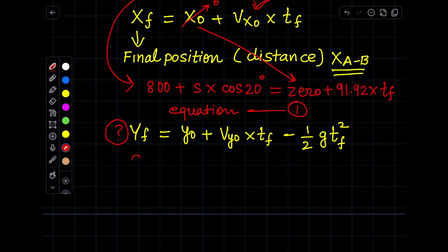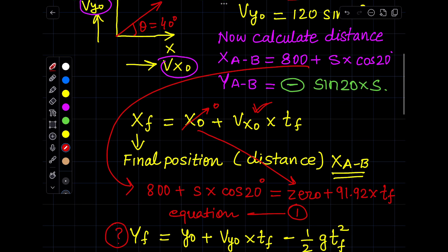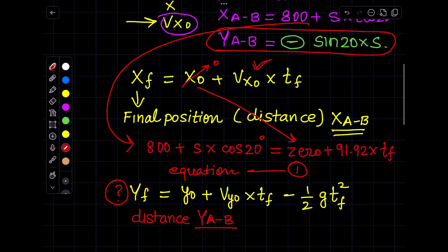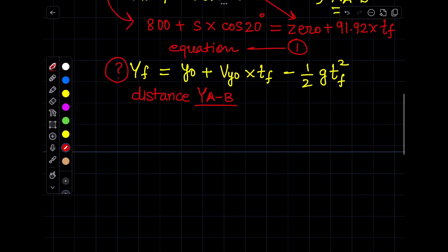So what is this YF? YF is the distance from A to B in Y direction, and we have already calculated it above. See here please, it is minus sine 20° times S. So here I will write minus sine 20° multiplied by S.